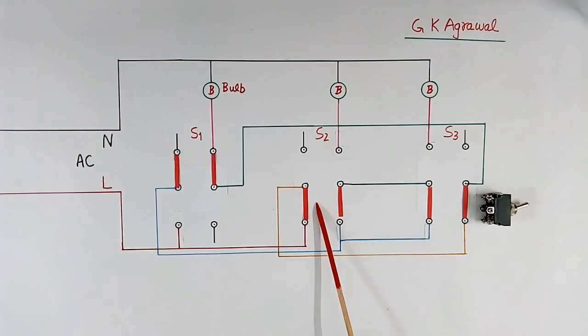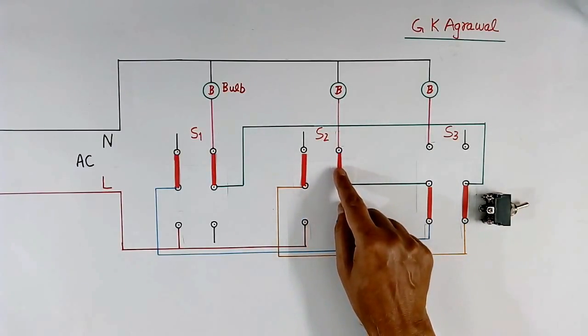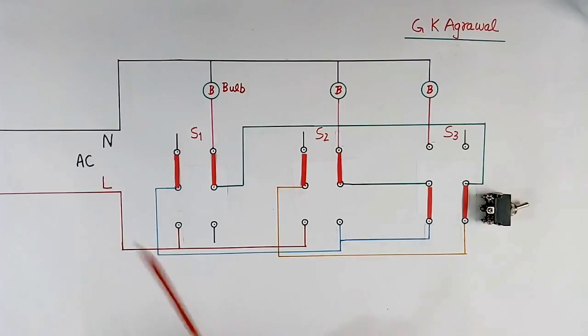So if either this one or this one, this one I will switch ON, this will move up, or this will move up, so this connection will be broken. Now I will switch ON this, so this should become OFF. Let us see connection. So no connection, so it has become OFF.